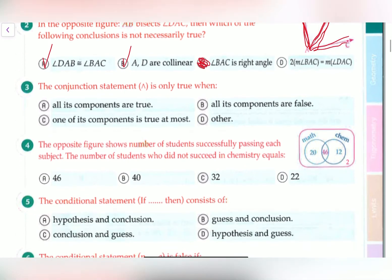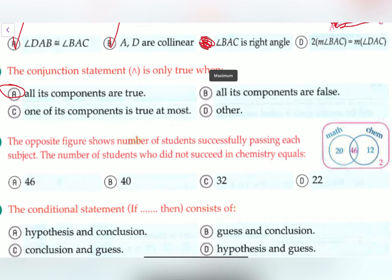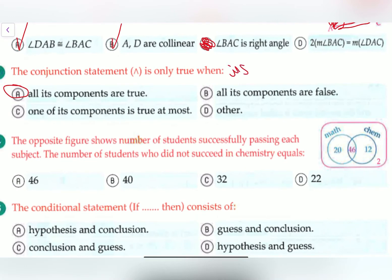So this is the answer. Now let's move on to question number 3. So it says the conjunction statement is only true when. The conjunction statement is only true when. So basically we're just looking for the definition. And the definition of the conjunction statement is only true when all of its components are true. So meaning A is the answer.